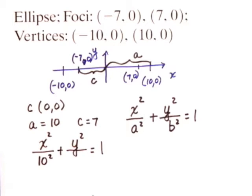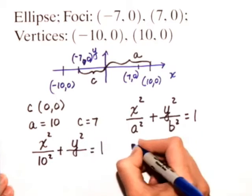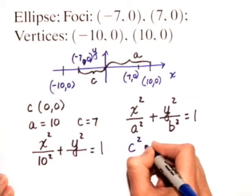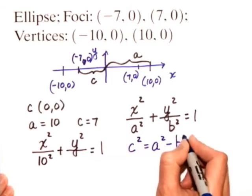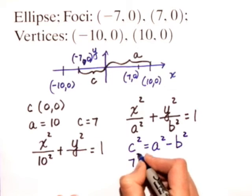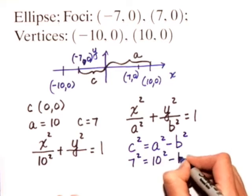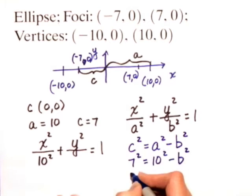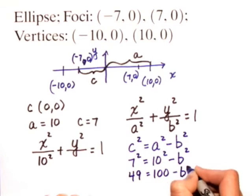It's easy enough to find b because whenever we have an ellipse, the equation we use is c² equals a² minus b². So in this case, we have 7² equals 10² minus b². So we have 49 equals 100 minus b².